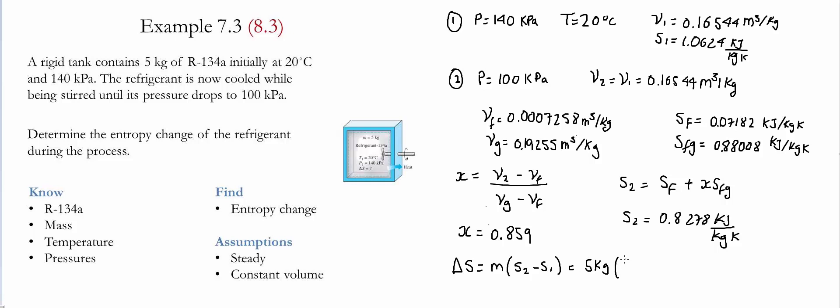The value at s2 is 0.8278 and the value at state 1 is 1.0624, in units of kilojoules per kilogram Kelvin. Notice kilogram and kilogram cancel and the final value is negative 1.173.